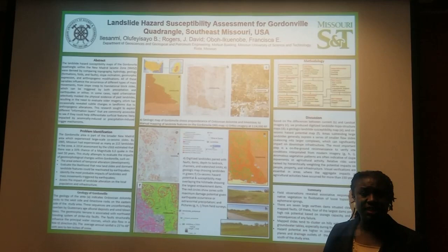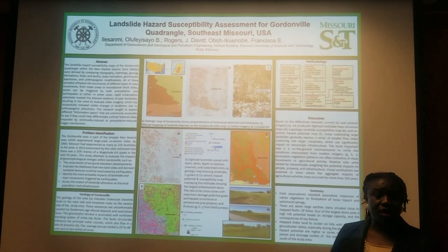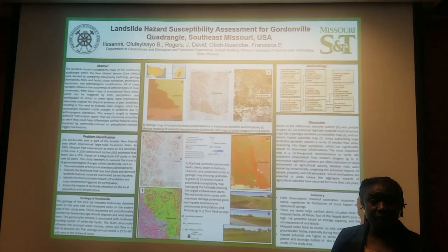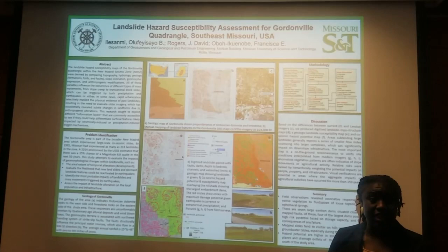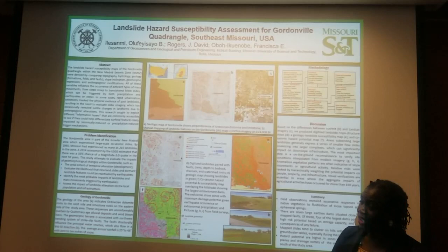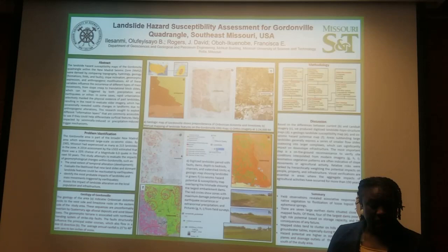In 1963, a topographic map was obtained and manually mapped for landslides. We then compared these with aerial imagery maps of 2016 downloaded from the USGS website. We then digitized these in an ArcGIS environment and overlaid the faults.